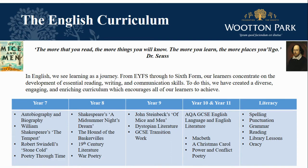In year eight we look at A Midsummer Night's Dream, but also introduce some more complex 19th century texts such as The Hound of the Baskervilles, Oliver Twist and Frankenstein. We also explore war poetry from World War One through to more modern conflicts.